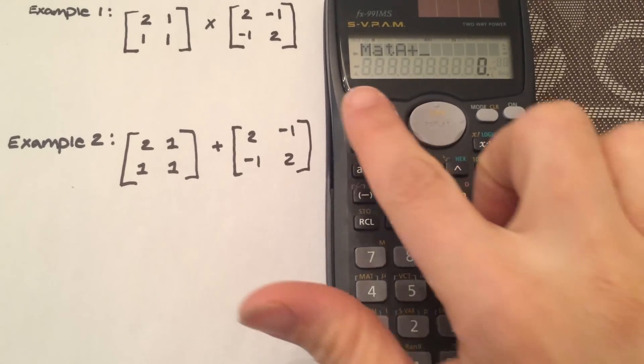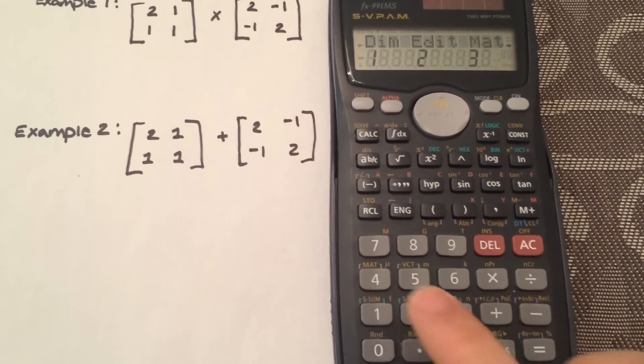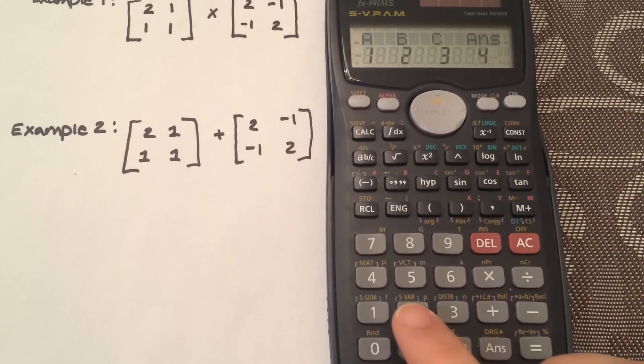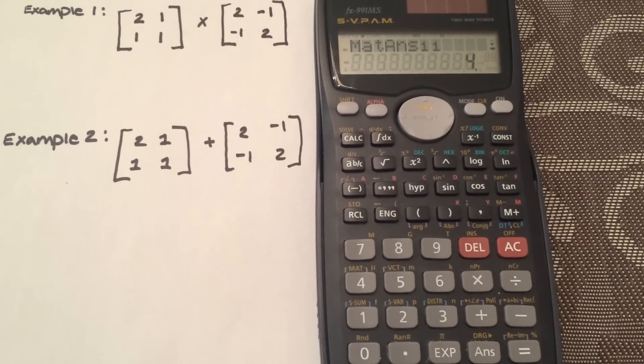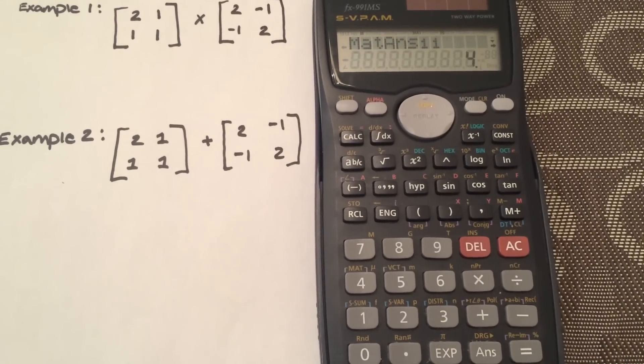And then shift 4, 3 for matrices, like matrix B. And if you add them, it's 4.